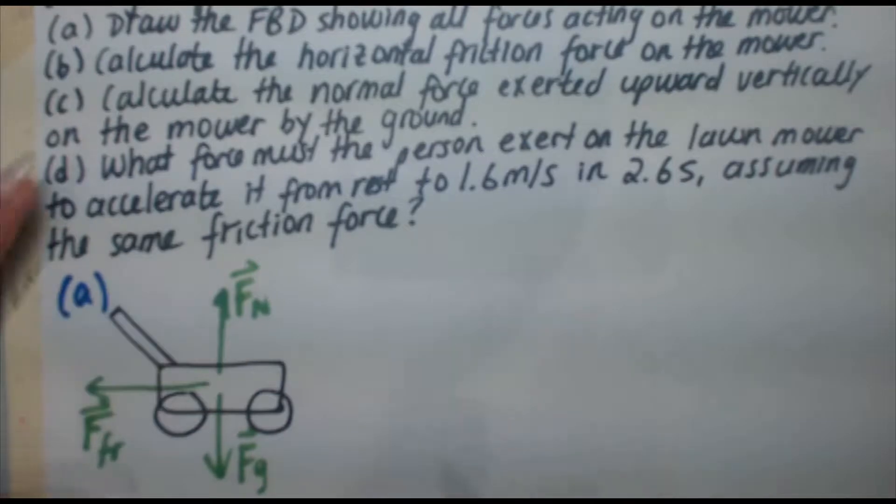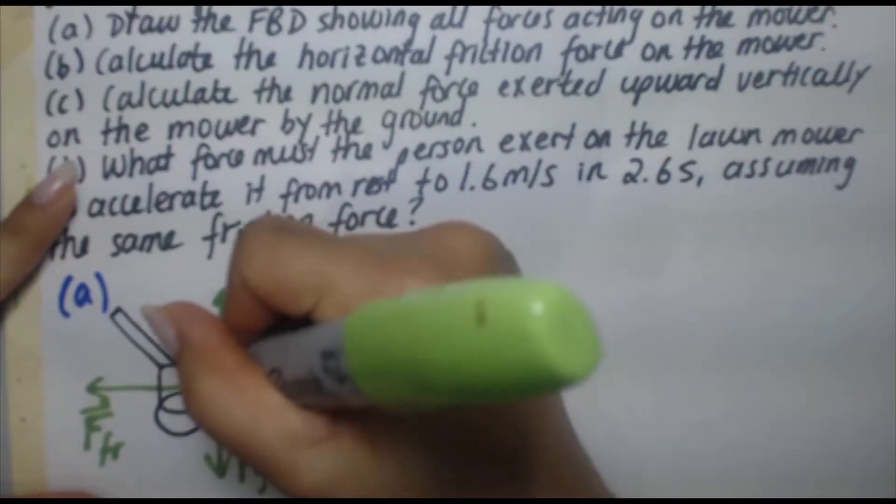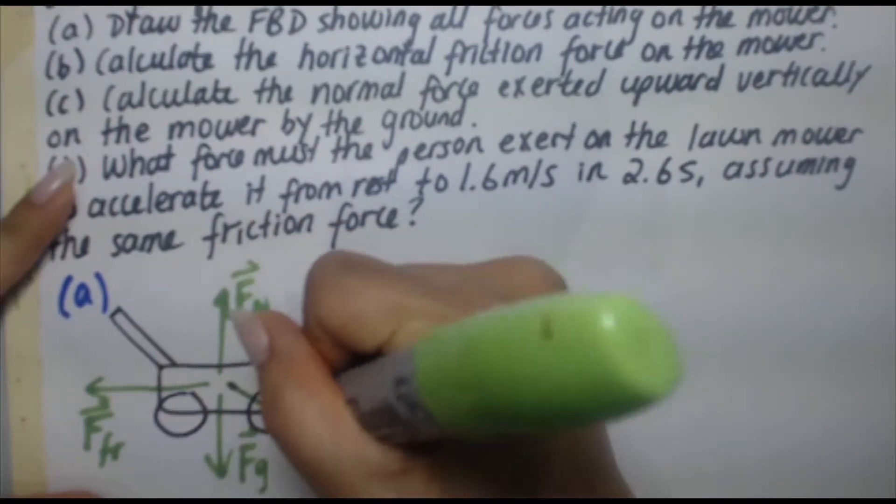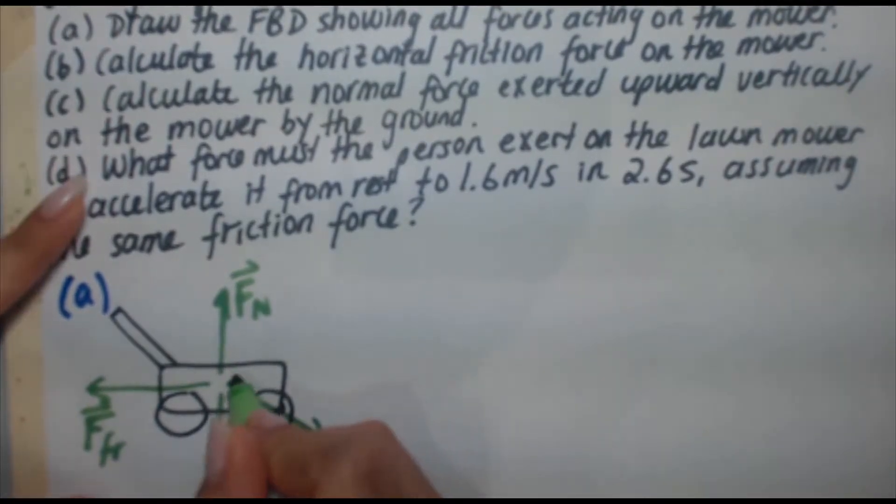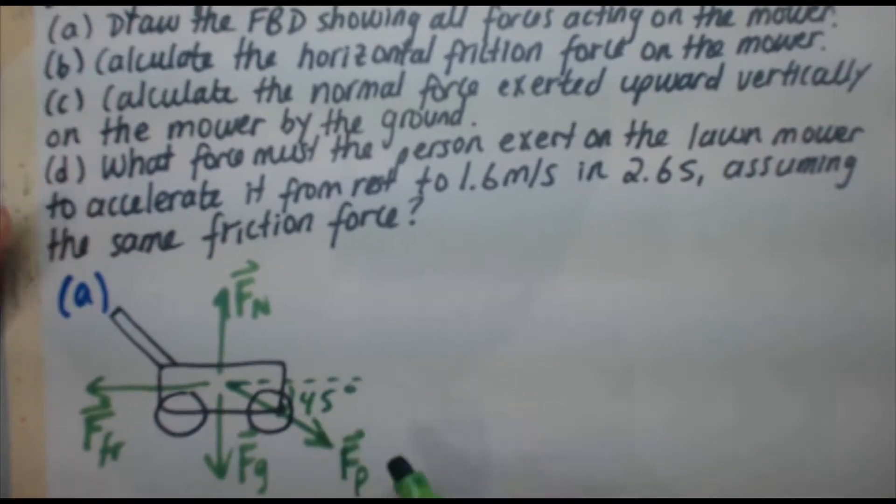So this applied force is going down. So if you imagine this going all the way through, it's going to go through like this. So the force of the person pushing on the lawnmower is actually going down on an angle. Okay, so that's going to be FP for F person. And that is done at a 45 degree angle.